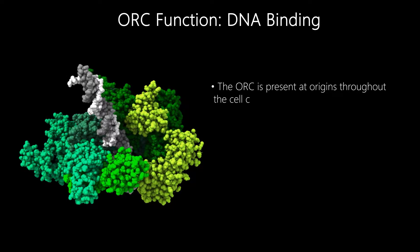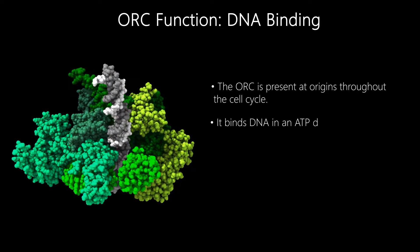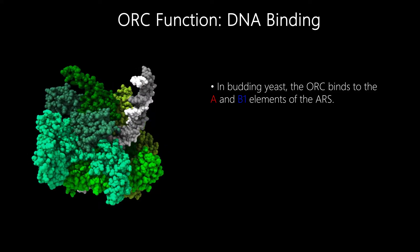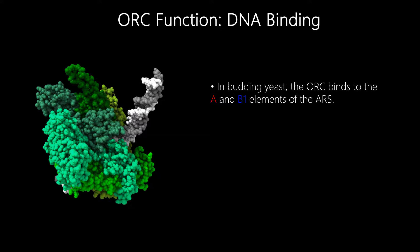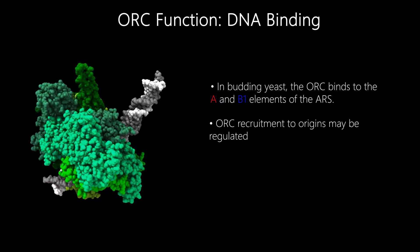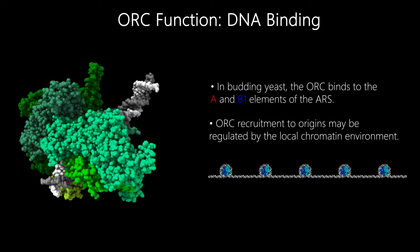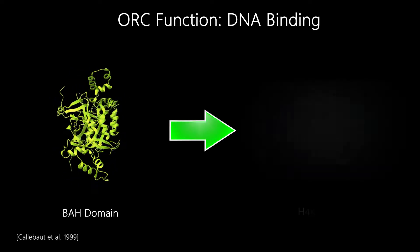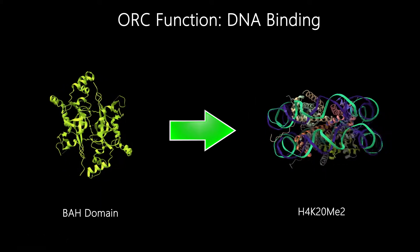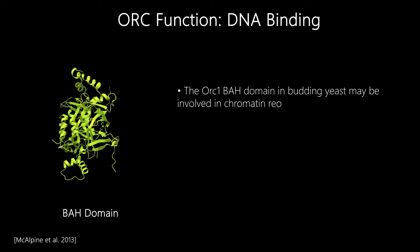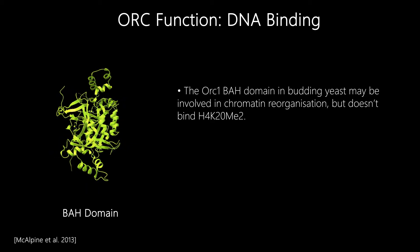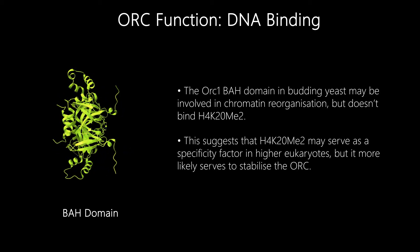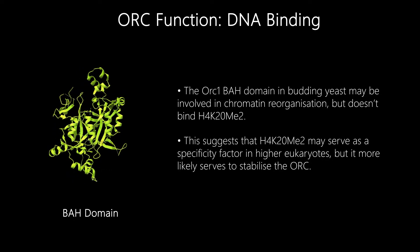The ORC complex is present at origin sequences throughout the cell cycle and binds DNA in an ATP-dependent manner. In budding yeast, the ORC complex binds to the A and B1 elements of the autonomously replicating sequence. ORC recruitment to origins may be regulated by the local chromatin environment. The ORC1 BAH domain in metazoans has been shown to interact with the histone methylation H4-K20-Me2, whereas in budding yeast the BAH domain may be involved in chromatin reorganisation but does not bind H4-K20-Me2. This suggests that this methylation may serve as a specificity factor in higher eukaryotes, but due to its abundance it seems more likely to stabilise ORC binding to chromatin.